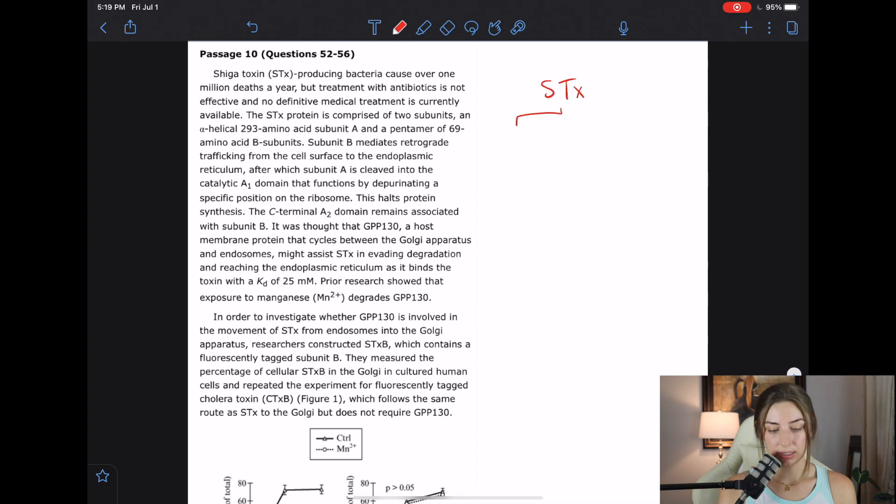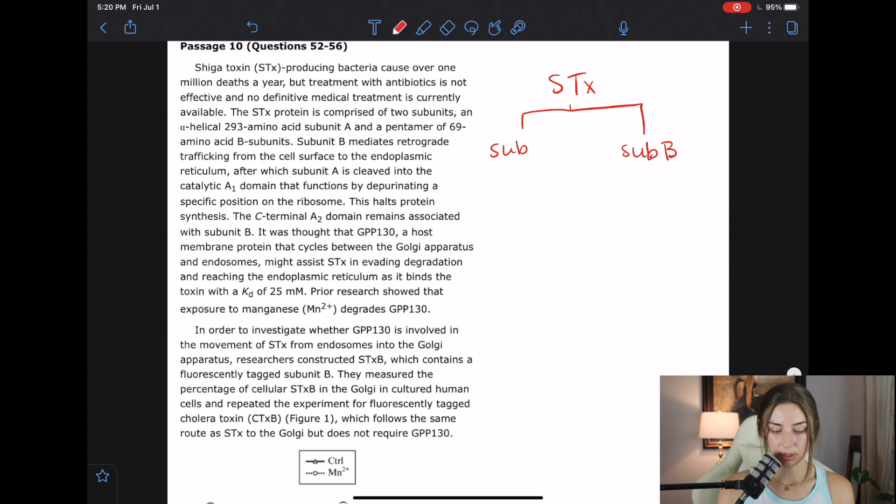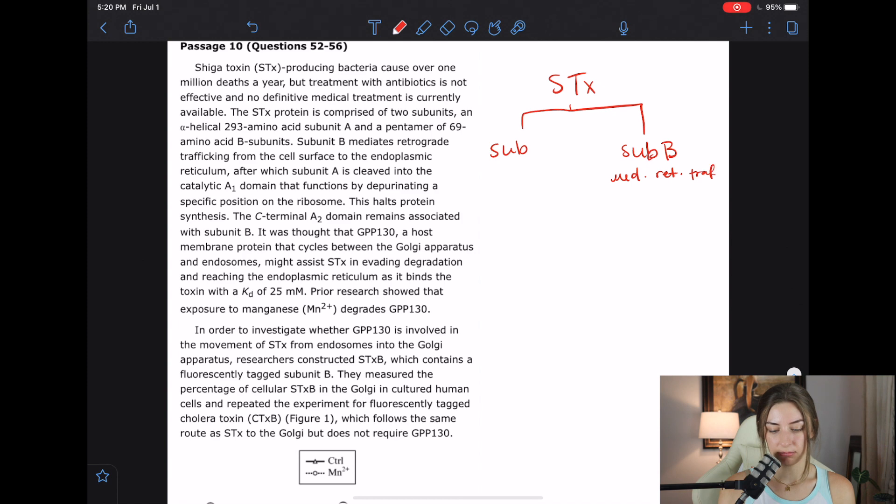I'm going to put STX and then sub A and sub B. I don't know if this is going to come in handy, but it might. Subunit B mediates retrograde trafficking from the cell surface to the endoplasmic reticulum, after which subunit A is cleaved into the catalytic A1 domain that functions by depurinating a specific position on the ribosome. This halts protein synthesis. I'm going to write a little note. Retrograde trafficking, subunit A gets cleaved into A1, which helps halt protein synthesis.